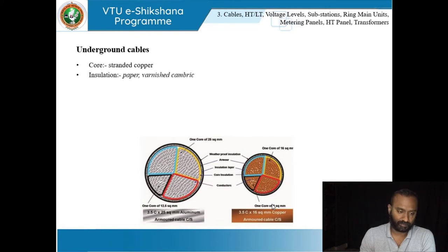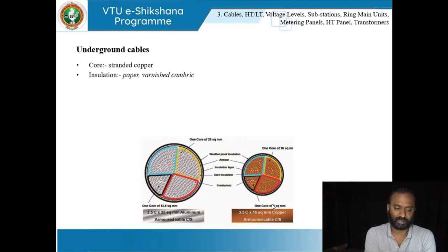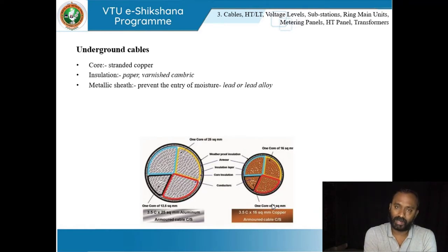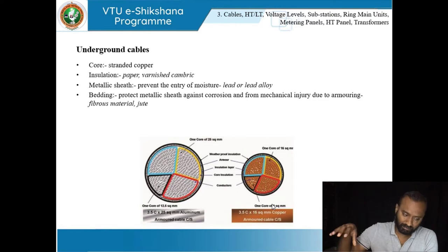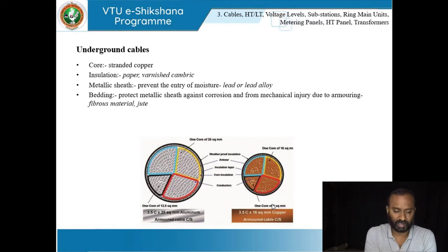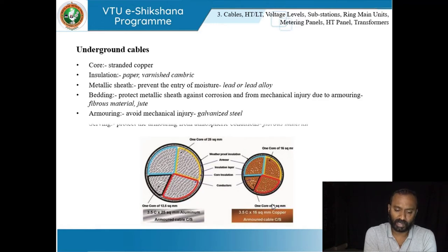These are underground cables. The core is usually made of standard copper. The metallic sheath — usually made of lead or lead alloy — prevents moisture entry. Bedding is a protective metallic sheet against corrosion and mechanical injury since the cables are buried underground at a particular depth. Armoring is to avoid mechanical injury and is usually galvanized steel. Serving protects the armoring from atmospheric conditions using a fibrous material.